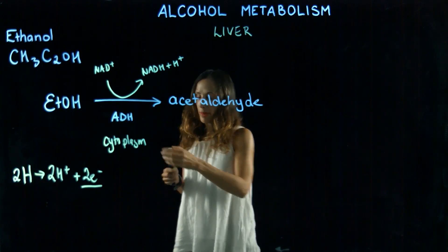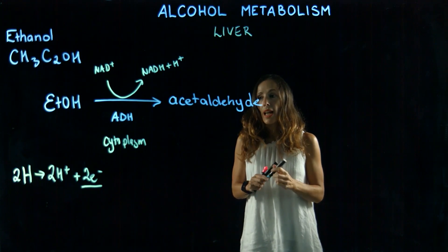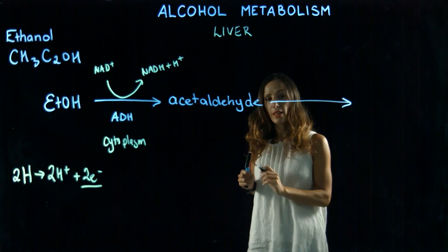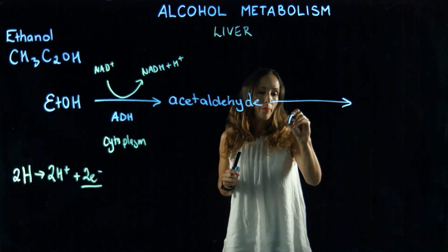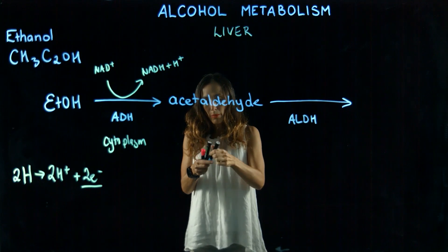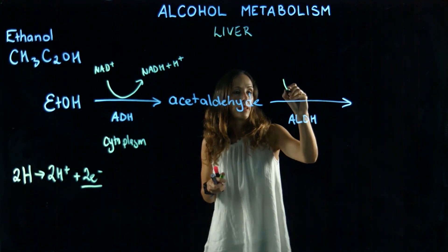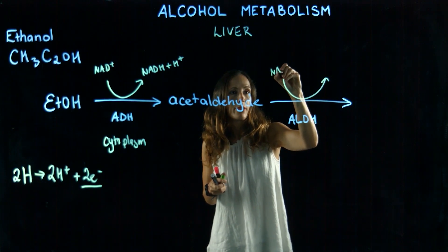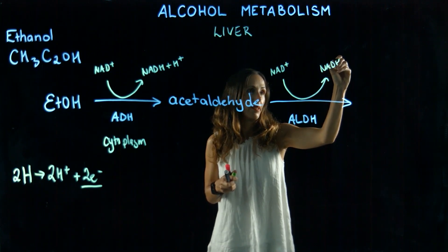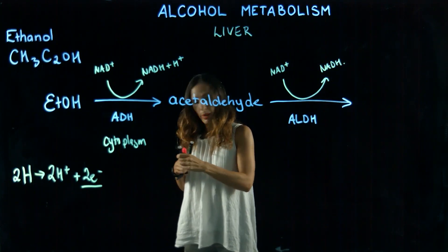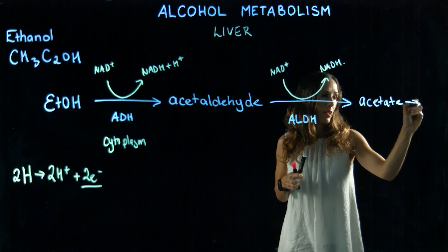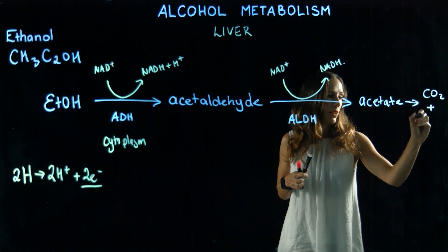This is our first step with the enzyme alcohol dehydrogenase, and then we need to further oxidize our acetaldehyde. This is done by acetaldehyde dehydrogenase, and along the way we are also going to get NAD+ being used to produce NADH. We're going to have produced acetate, and this can be further used to give us carbon dioxide and water.